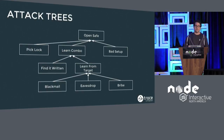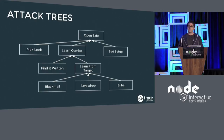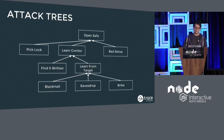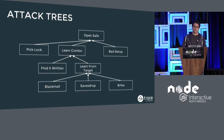Imagine a real-life case of opening a physical safe. This tree shows us how an attacker could open that given safe. To open the safe, he either has to picklock it, learn the combo, or use a bad setup of the safe. To learn the combo, he either has to find it somewhere written, or learn it from the target. And to learn from the target, he either has to blackmail, bribe, or eavesdrop on him.